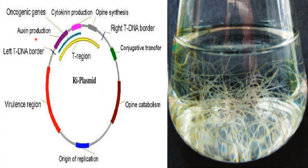The T-DNA contains genes that code for auxin production, cytokinin production, and opine synthesis. Auxin is used for the elongation of cells to produce hairy roots, whereas cytokinins are used for cell division. Opines are unusual amino acids such as octopine, agropine, napoline, manopine, and cucumopine, which are used by the bacterium as a source of carbon, nitrogen, and energy.